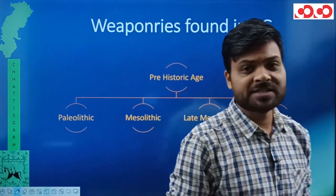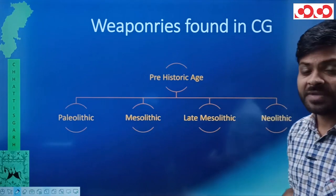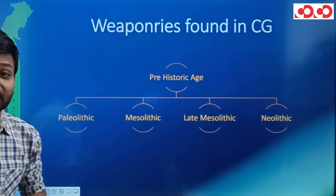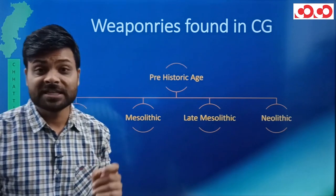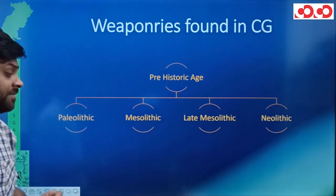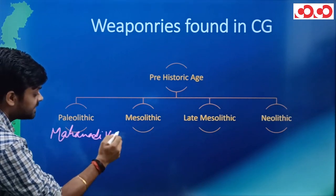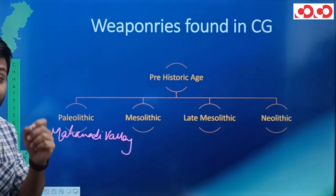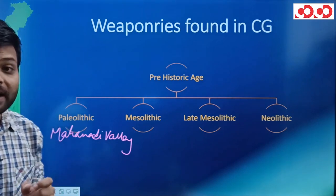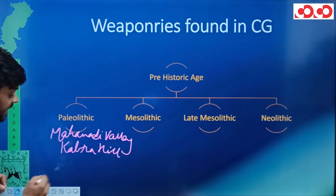अब next हम देखने वाले हैं Chhattisgarh में जो weaponries मिली हैं। Prehistoric age को classify किया गया है — Paleolithic, Mesolithic, Late Mesolithic और Neolithic Ages। यहाँ सिर्फ हमें याद रखना है कि ये weaponries Chhattisgarh के किस-किस location से मिली हैं। Paleolithic Age की weaponries मिली हैं: पहले Mahanadi Valley से, इसके अलावा Raigarh district से — जिसमें सबसे पहले Kabra Hill, और उसके बाद Botalda।